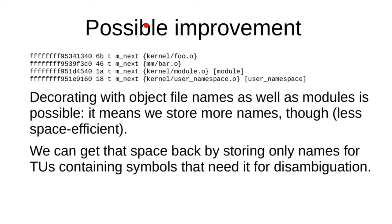Even if the translation unit object file names weren't there, I think it would still need to be a separate file, because existing tools assume that a square-bracketed module name has an object file on disk — and that's not true if some of them are built into the kernel. They shouldn't really depend on that, but they do.